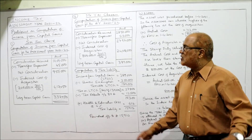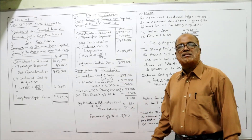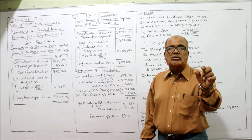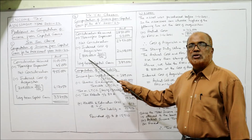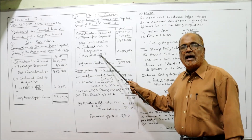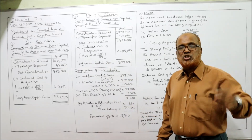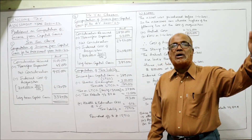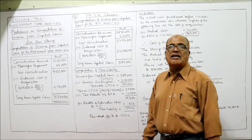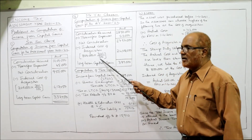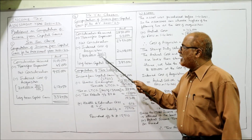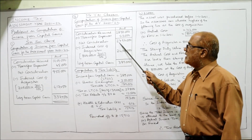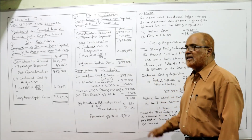Indexed cost of acquisition: FMV on 1-4-2001 is 8 lakh. Multiply by current previous year index 301 divided by 100 (since asset purchased before 1-4-2001, index number of purchase year is taken as 100). So 8,00,000 × 301 ÷ 100 = rupees 24,08,000. Net consideration 27,97,000 minus indexed cost 24,08,000 gives rupees 3,89,000 as long-term capital gain.